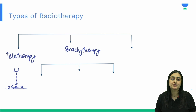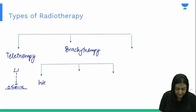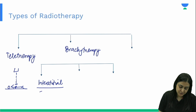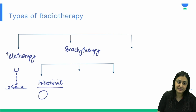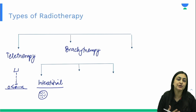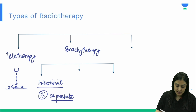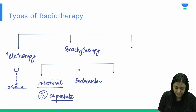Those side effects can be prevented by brachytherapy. 'Brachy' means short, so the distance between the source and the tumor is short. The first mode is interstitial brachytherapy — the prototype is carcinoma prostate, where radioactive pellets are placed within the parenchyma of the prostate so all radiation is concentrated there and surrounding organs are spared.